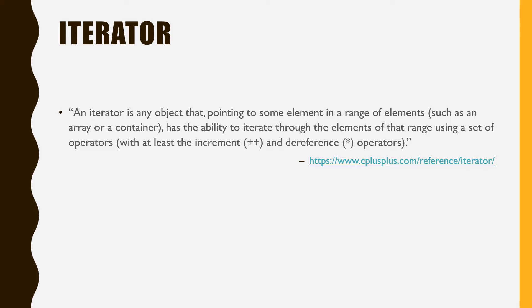Also, the iterator class should support at least two operators: the increment, or plus plus, and the dereference, or star. In the rest of the video, we will develop the iterator classes for the array and the linked list data structure, and we use that as examples to illustrate the idea.